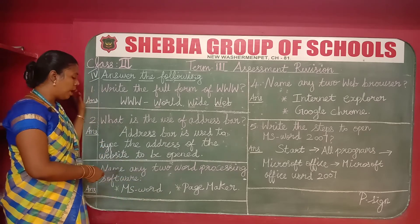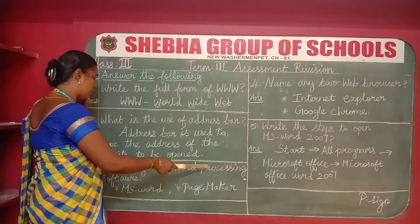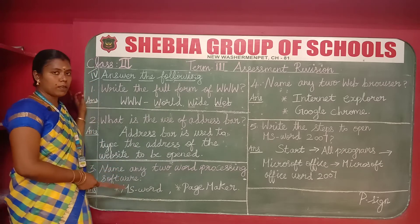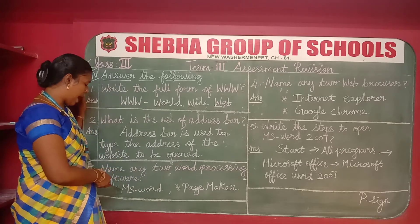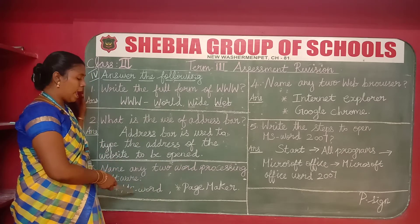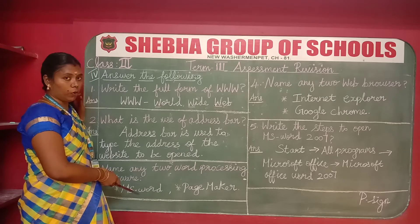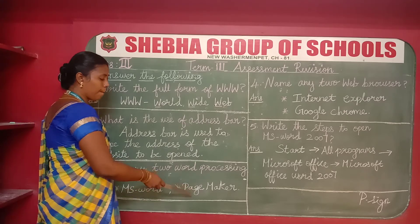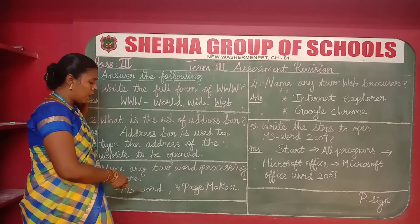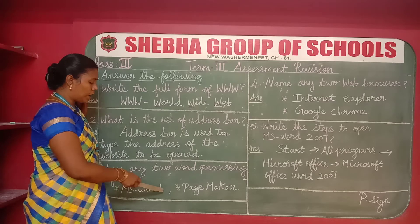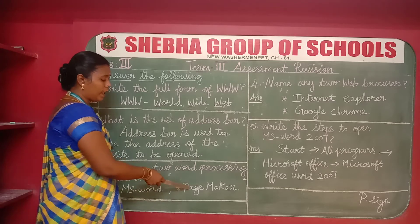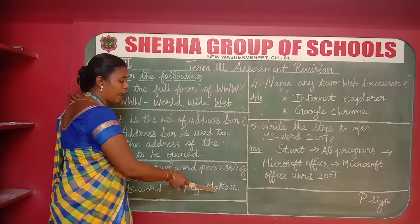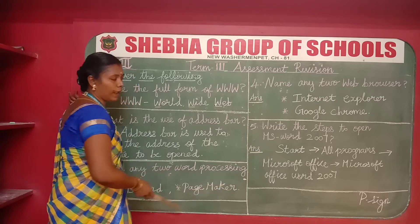Number three: name any two word processing software. The answers are MS Word and Page Maker — M-S W-O-R-D and P-A-G-E M-A-K-E-R.